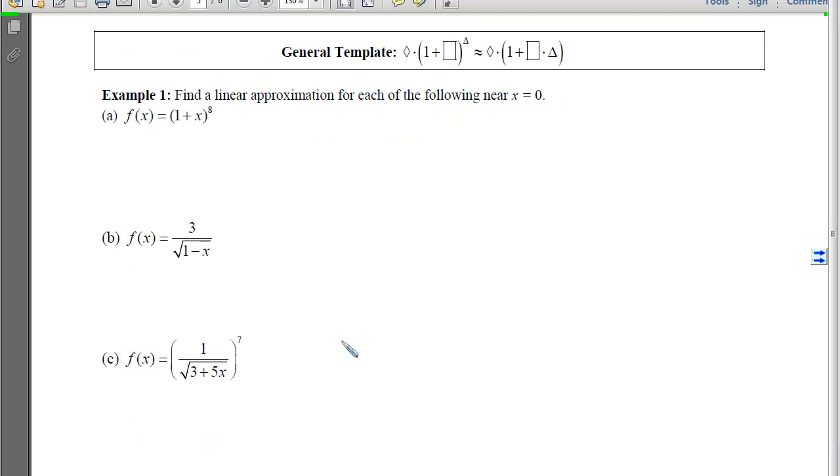What this allows us to do is work with a general template. As long as we can fit whatever problem we have into this template, then we can create its approximation. We can have coefficients in front times (1 + something) raised to another power. When we want to approximate it, we can simply bring this triangle and this square and multiply them together.